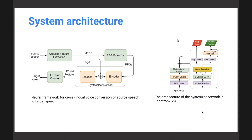In the system architecture, from the source speech two things are extracted: MFCC - a vector of numbers representing features for time windows of the speech signal - and the fundamental frequency of each window. The MFCCs are used to extract PPG features, which are speaker and language independent. By using the target speaker's fundamental frequency and the PPG from the source speaker, the target speech is generated.